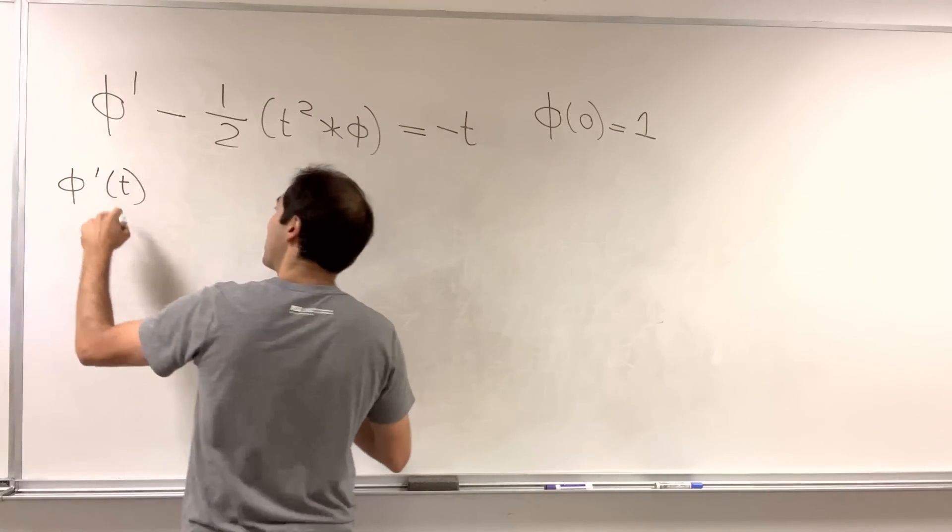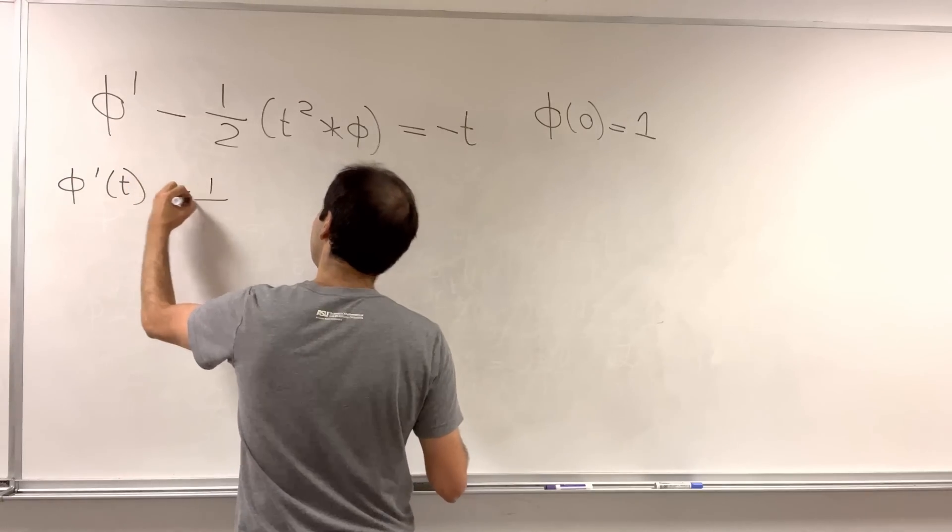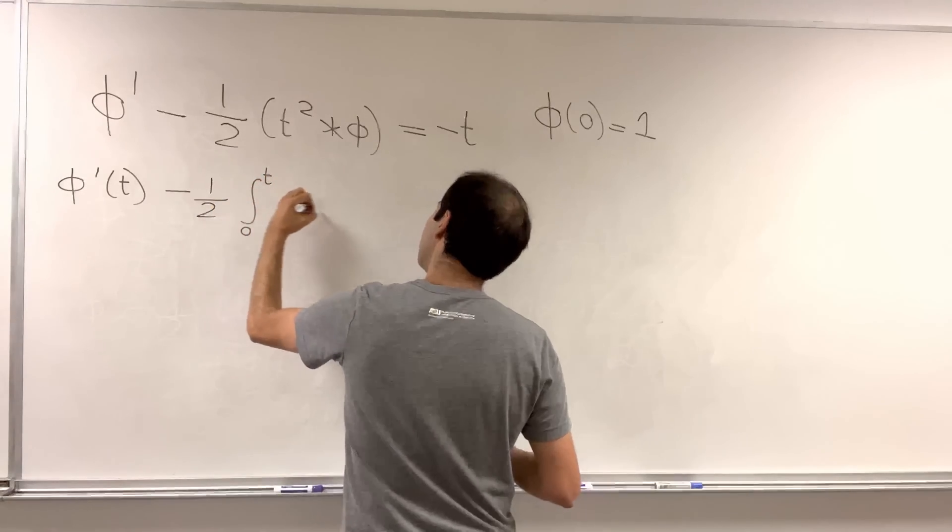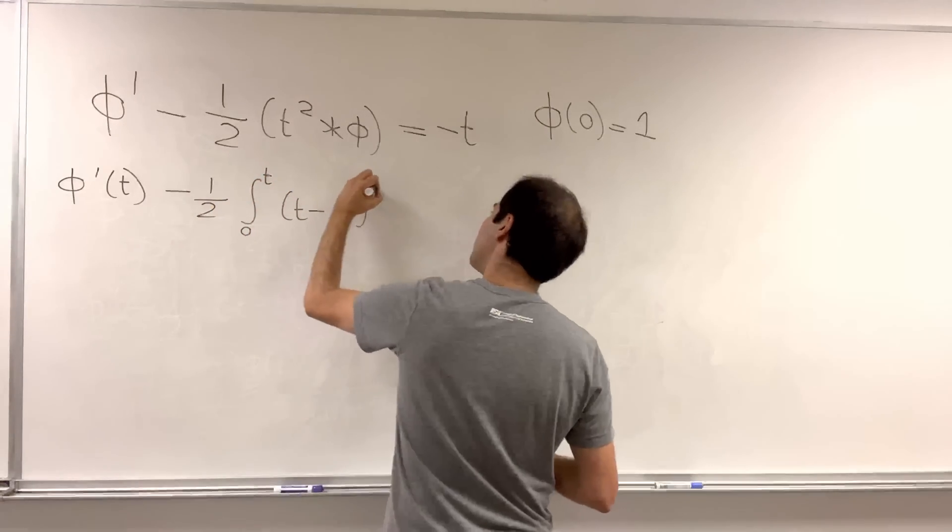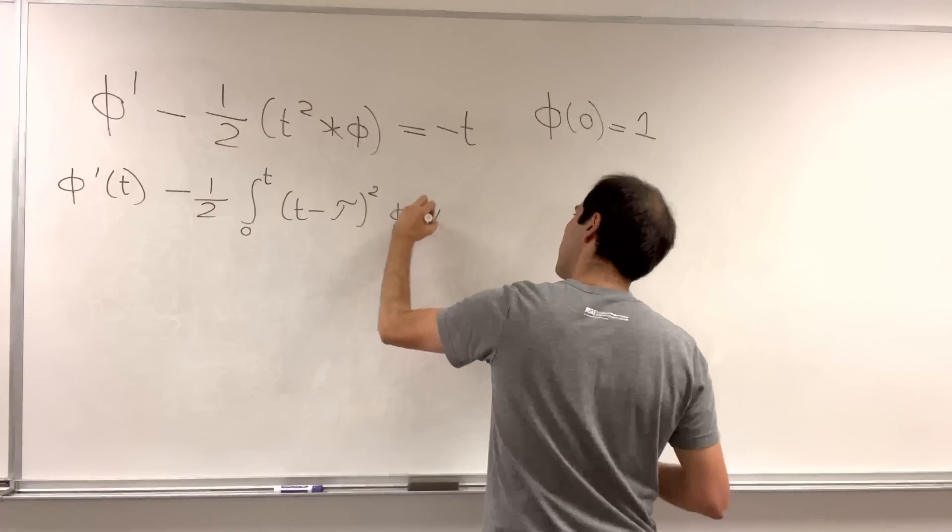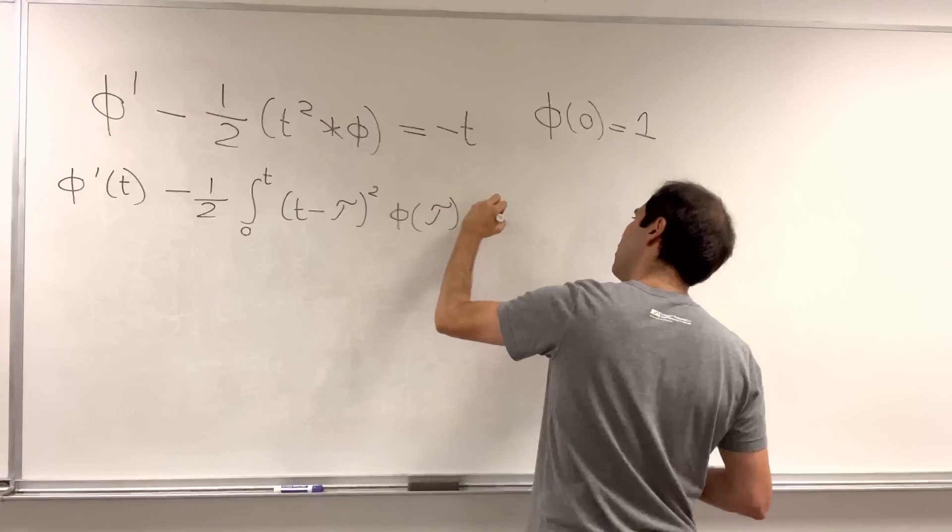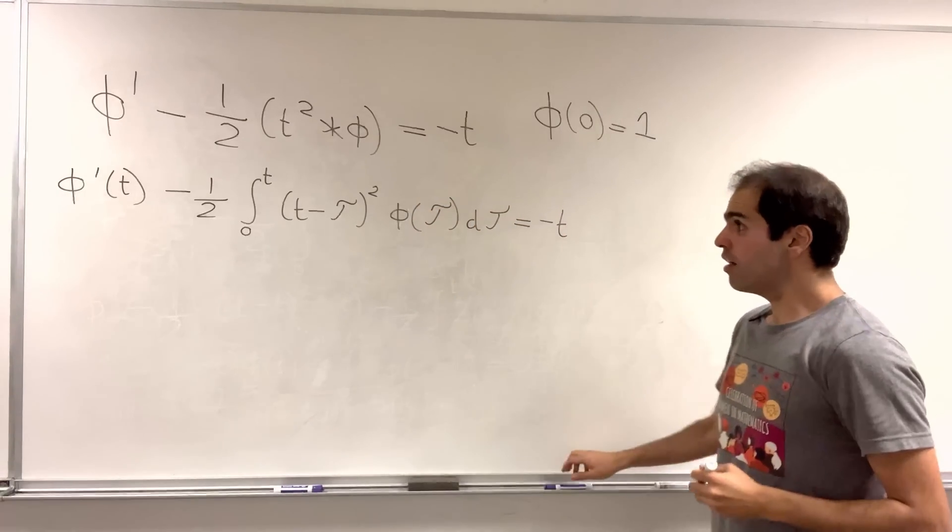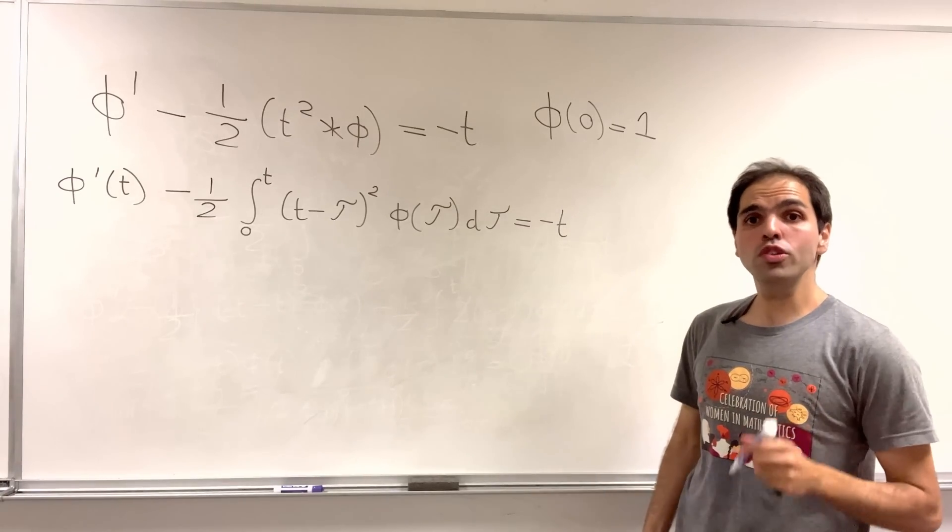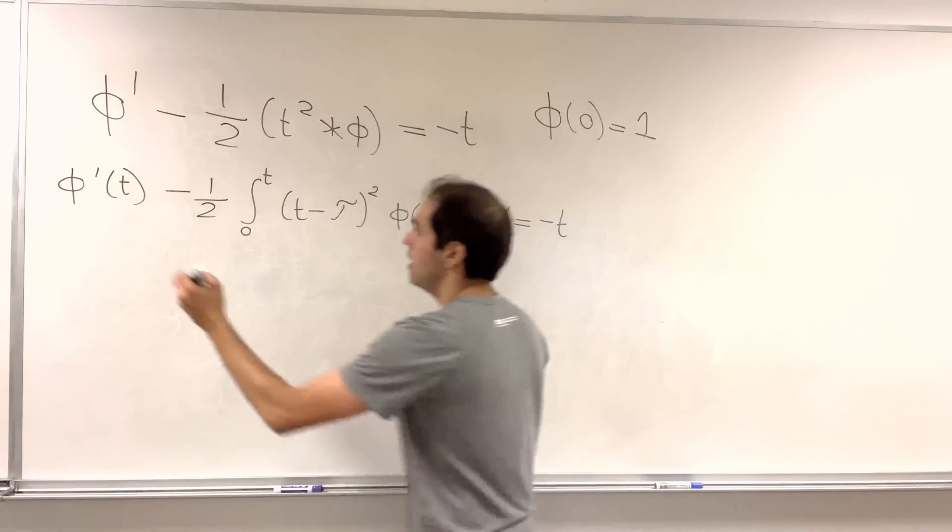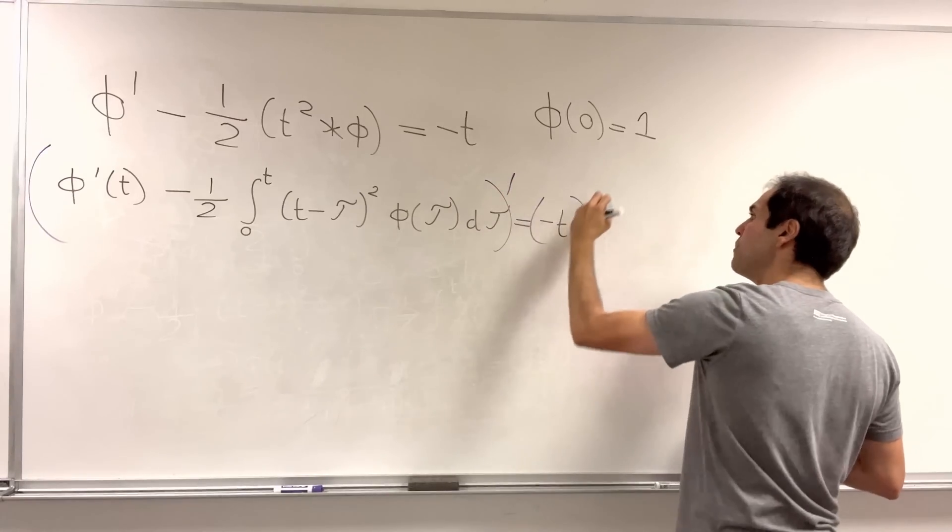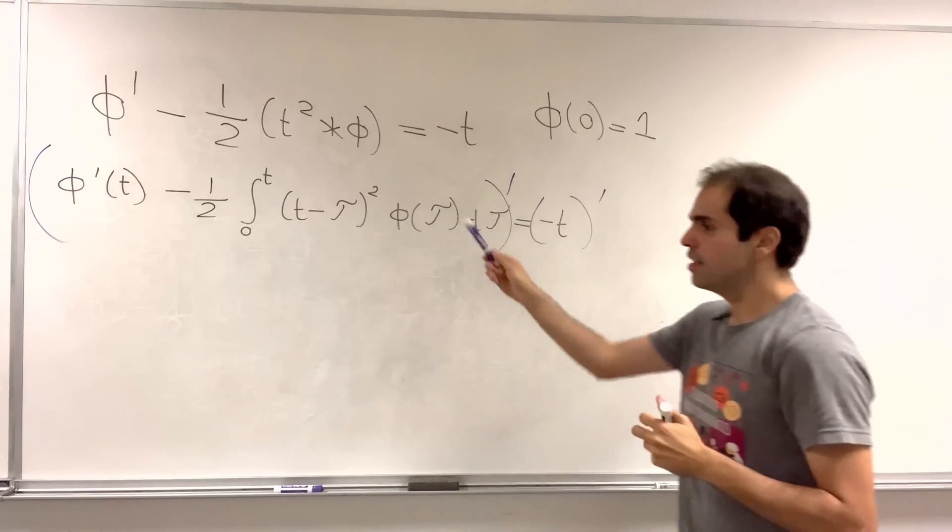But for this, we do need to use the definition of convolution. So, this equation tells you, phi prime of t minus one-half integral from zero to t, t minus tau squared, phi of tau, d tau equals minus t. So, we do have an integral, so in order to get rid of the integral, let's just differentiate both sides.